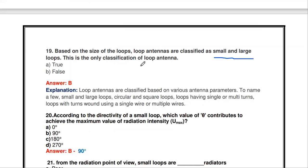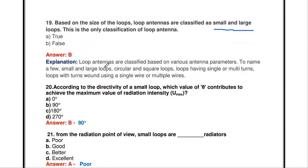Next: based on the size of loops, loop antennas are classified as small and large loop — true or false? This is false. While loop antennas are classified as small and large based on size, that is not the only classification. They can also be classified by shape (square, rectangle, circle) and by number of turns (single-turn, multi-turn).